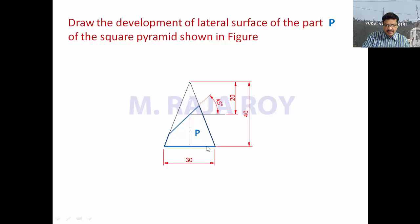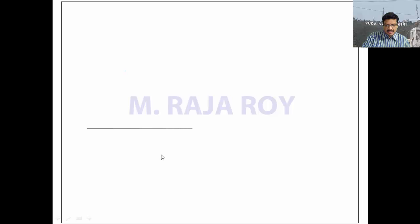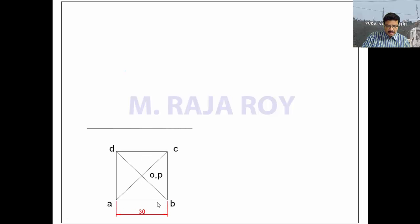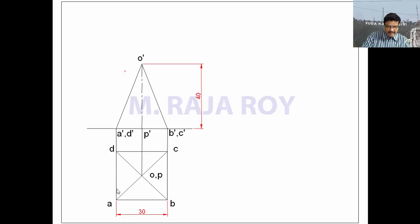Now start drawing the orthographic projections. Take the XY line. First draw the top view. The side of this square pyramid is 30. Name the base as ABCD and the apex as O, with the central base point as P. Now project the front view. The axis length is 40, giving you O dash at the top. Here you will get A dash and D dash, and here you will get B dash and C dash. This center point of the base is P dash.